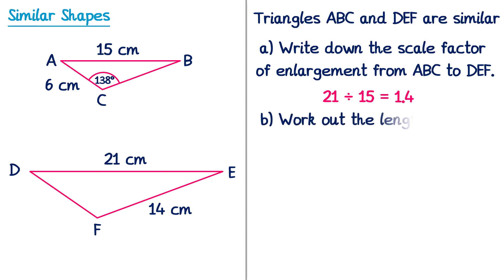For the second question we need to work out the length of DF. To do this we find the same side on the smaller shape, which is AC at 6cm. Since the scale factor is 1.4, all sides have been multiplied by 1.4 to get from ABC to DEF. So we do 6 multiplied by 1.4, which gives 8.4.